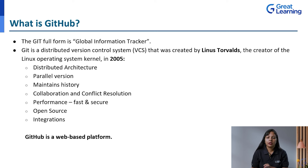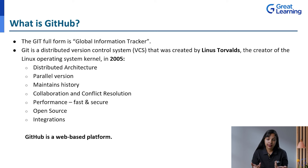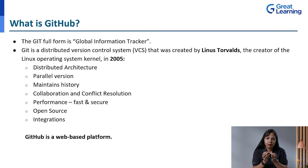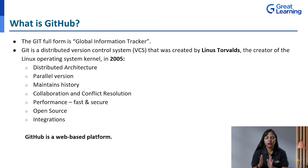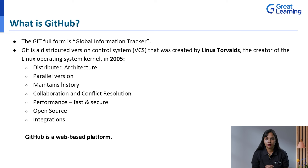Next is collaboration and conflict resolution. Suppose all three developers modified the exact same piece of code — which code will be stored back in the original copy? How to resolve this conflict is handled by Git. There are different logics behind which Git takes care of all these conflict resolution scenarios.